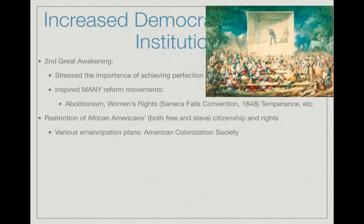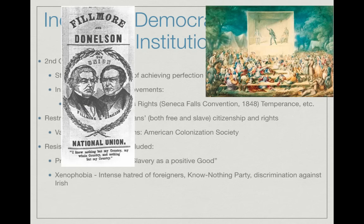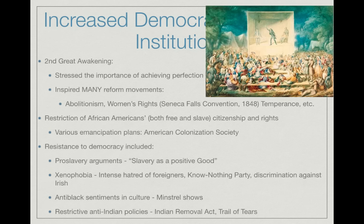African Americans' rights — both for free and enslaved — were restricted during this time. Emancipation plans like the American Colonization Society aimed for gradual emancipation and sending freed slaves back to Africa. You also see pro-slavery arguments defending slavery as a 'positive good.' There was also a huge xenophobia or nativism — intense hatred of foreigners — seen in the Know Nothing Party and discrimination against the Irish. Anti-Black sentiment was also expressed through minstrel shows, where white actors wore blackface and played stereotypical African-American roles.